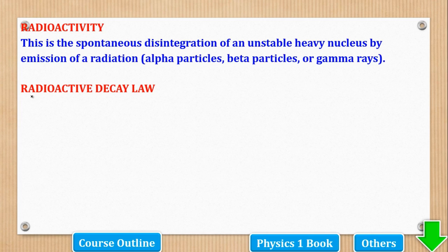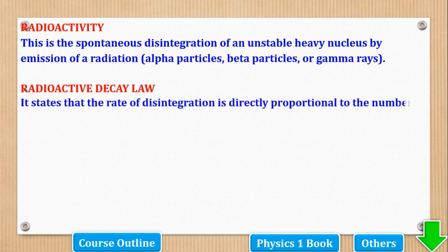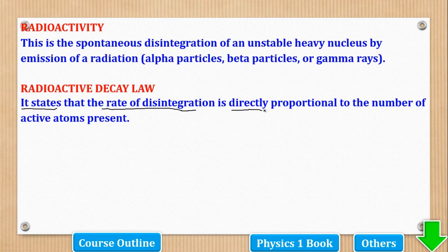What about the radioactive decay law? We are interested in the calculations, but there are some terms which we need to understand, and some formulas which we need to derive. After that, we shall go to the questions. The radioactive decay law states that the rate of disintegration is directly proportional to the number of active atoms present.